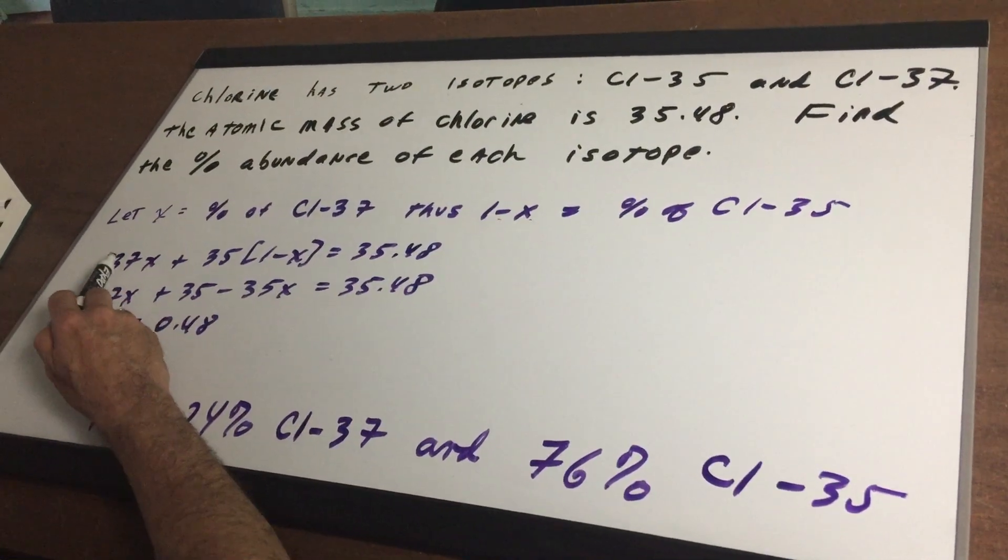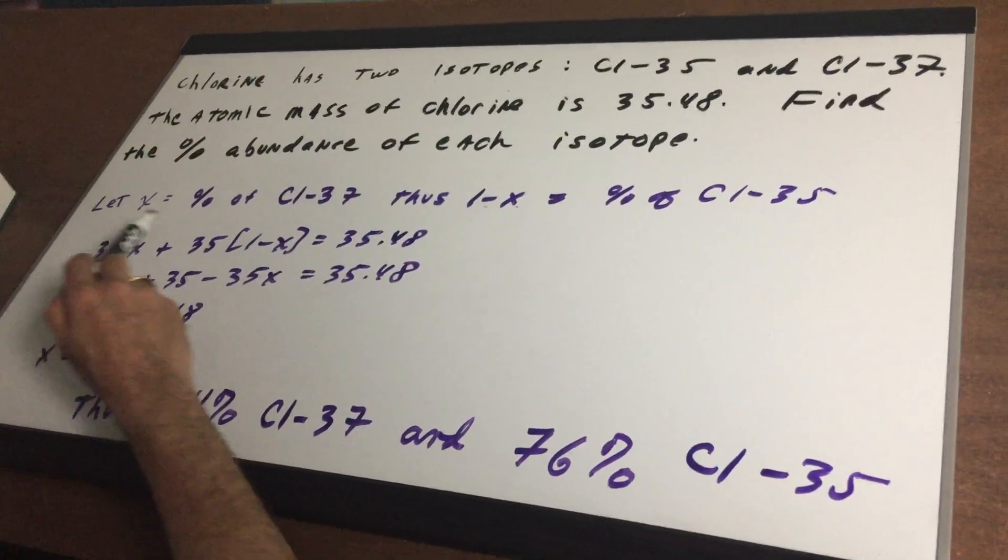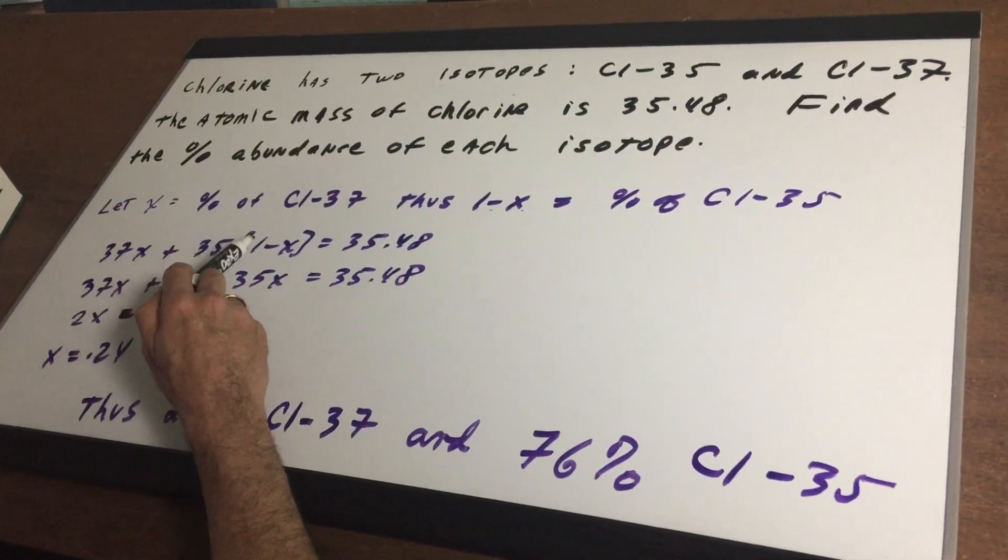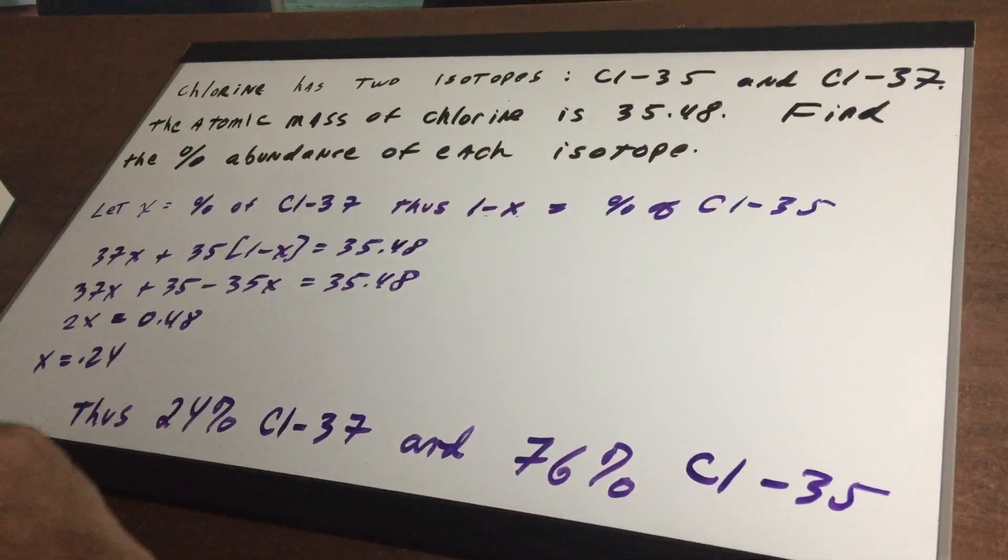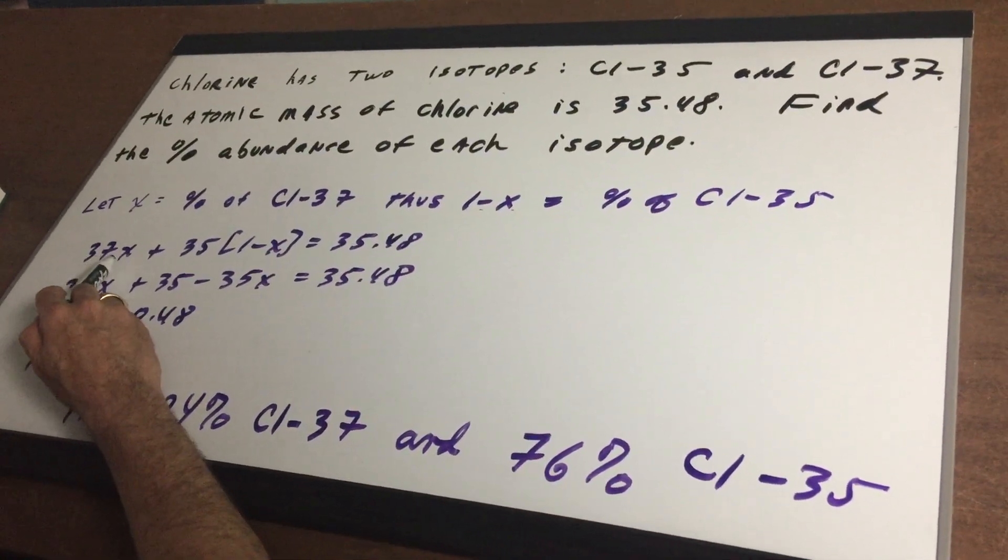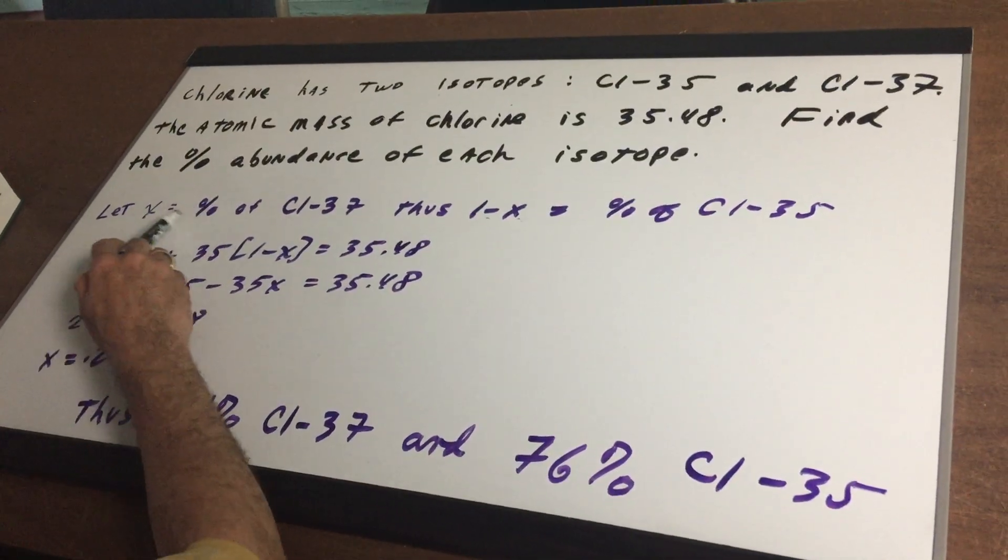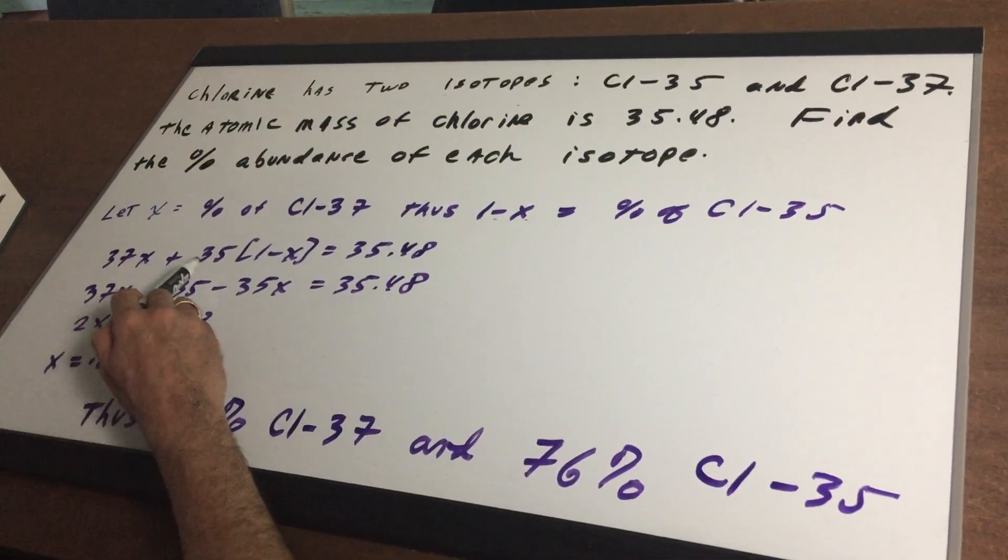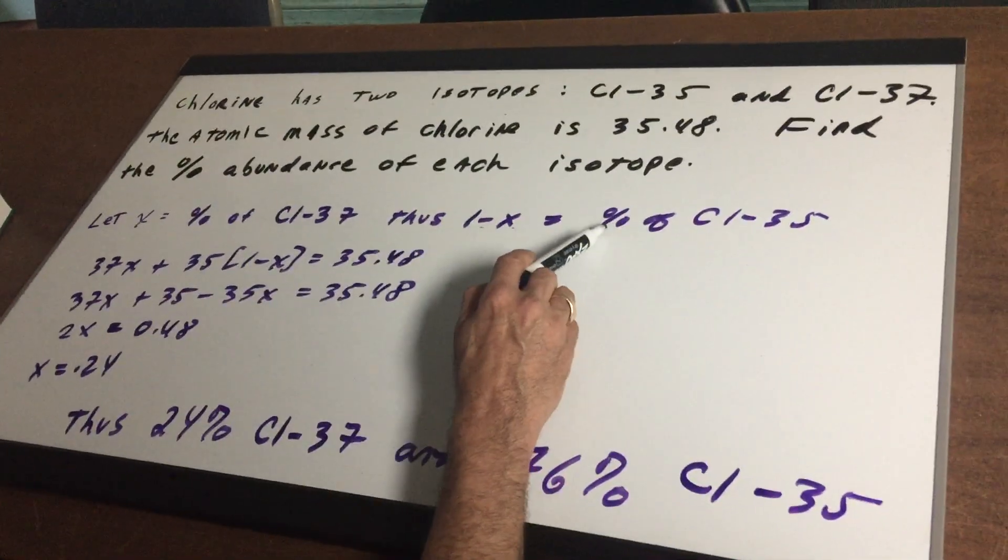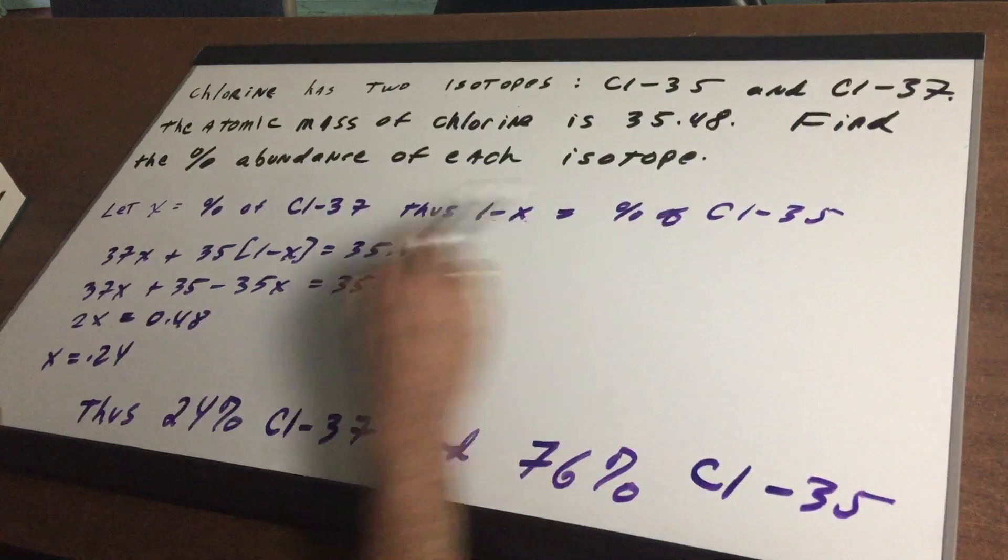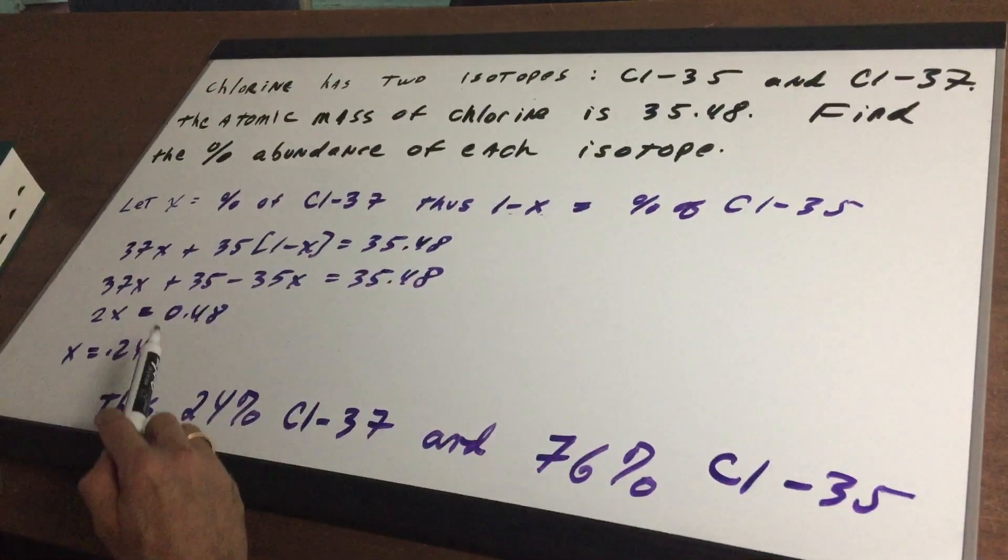So what we're going to do is we know the mass times the percent of one isotope plus the mass times the percent of the other isotope must equal to whatever the true atomic mass is. So it's going to be 37 times X, which that was the percent of the 37 isotope, plus 35 times 1 minus X, which was the percent of the 35 isotope here, equals the total weight or mass is 35.48.